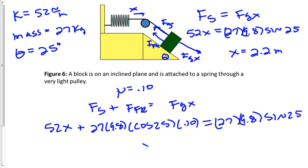Now we'll expect x to be a smaller value. Because friction is also opposing the motion down. It's kind of helping the spring. And indeed, it comes out to be 1.7 meters.